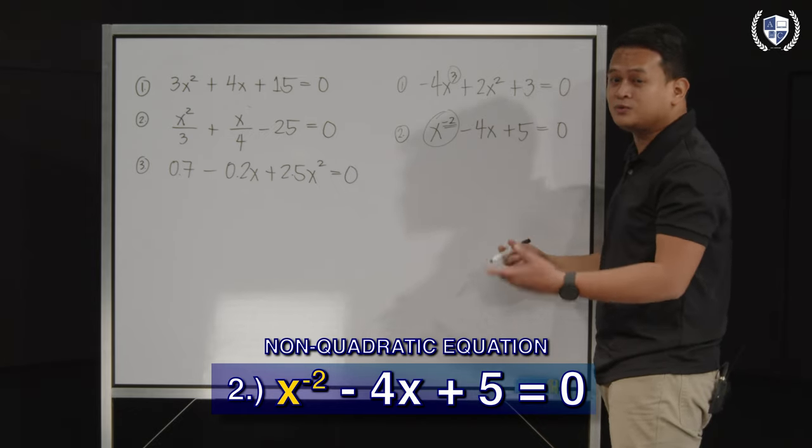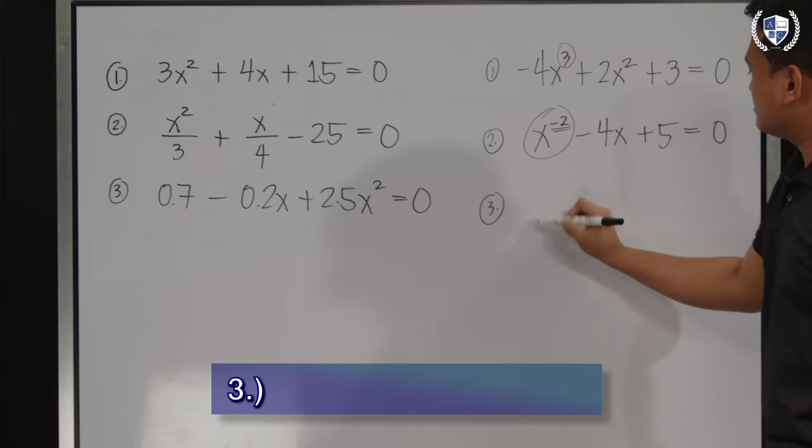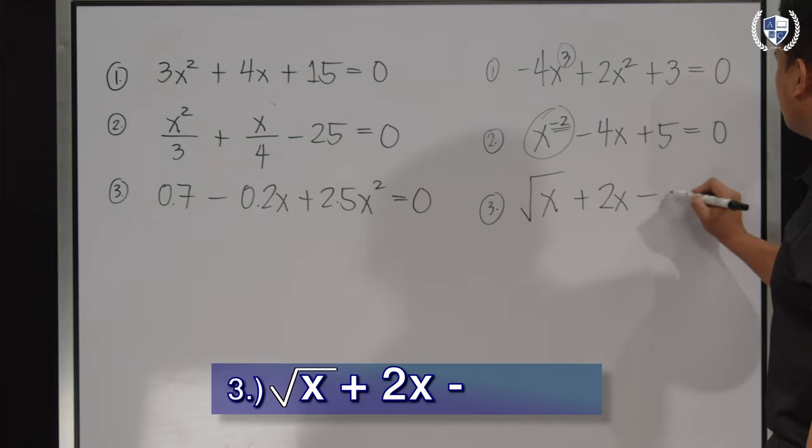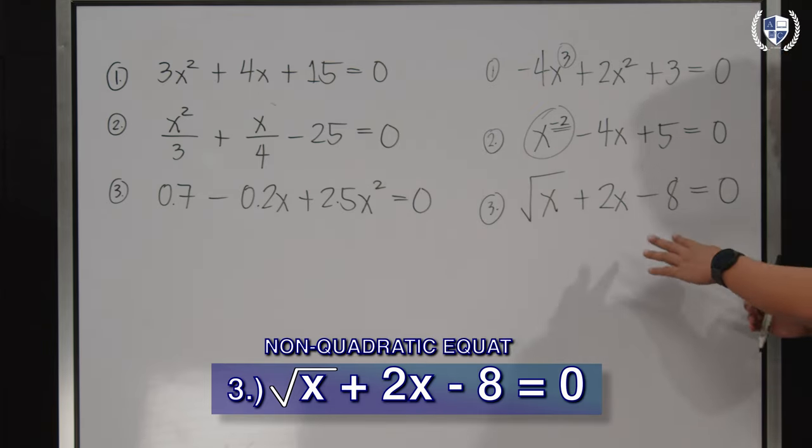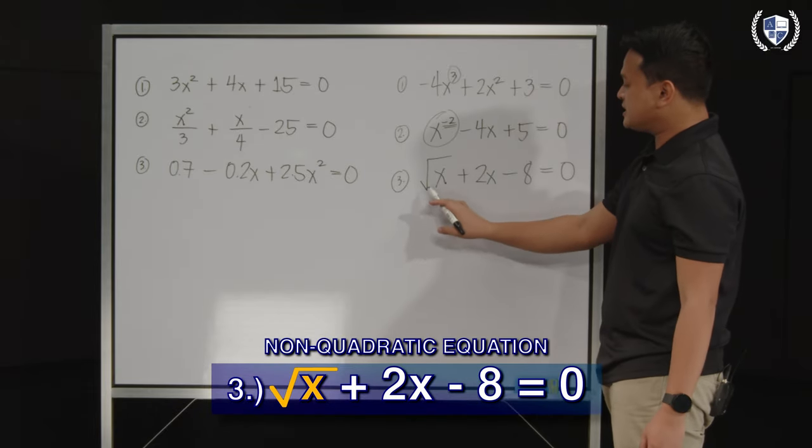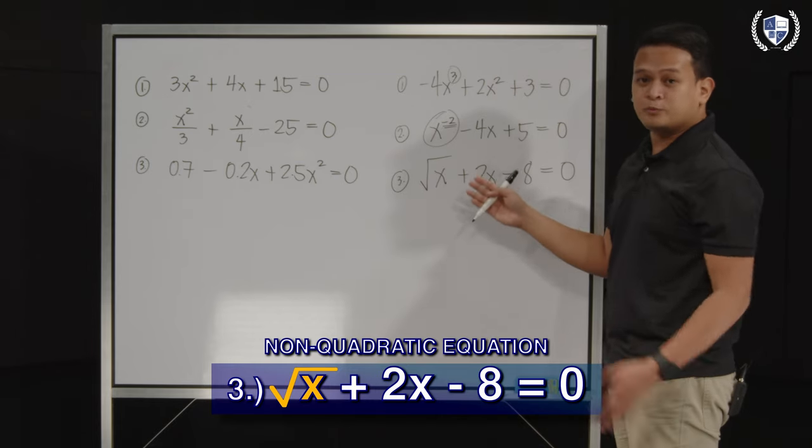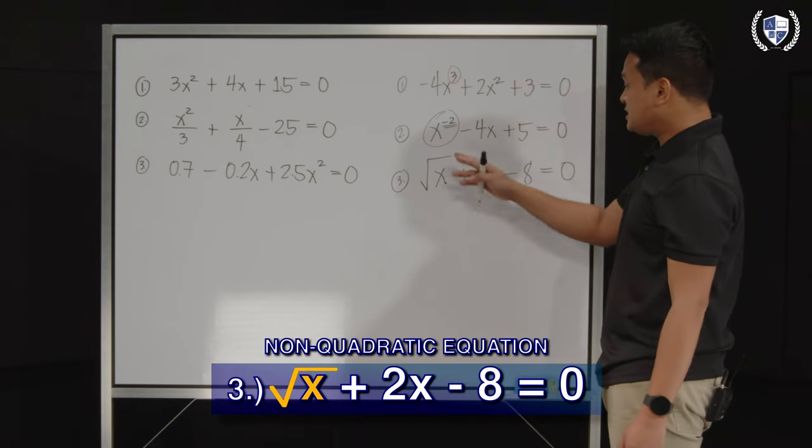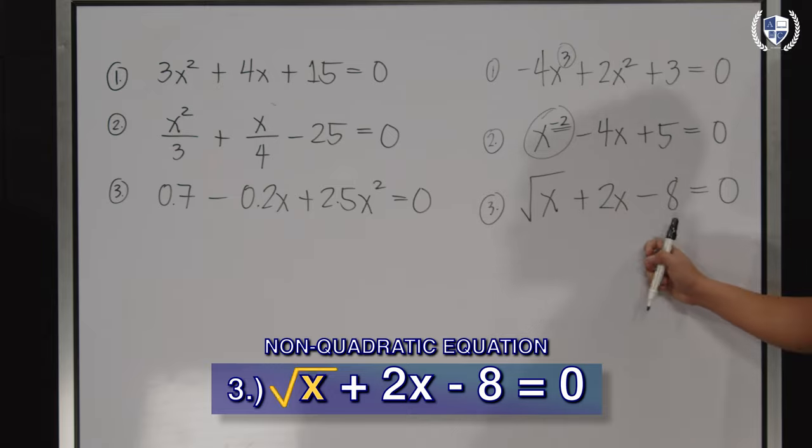Last, √x + 2x - 8 = 0. Here, we can see that our variable x is inside the radical symbol square root. And we also cannot have variable x under the radical symbol, making this example a non-quadratic equation.